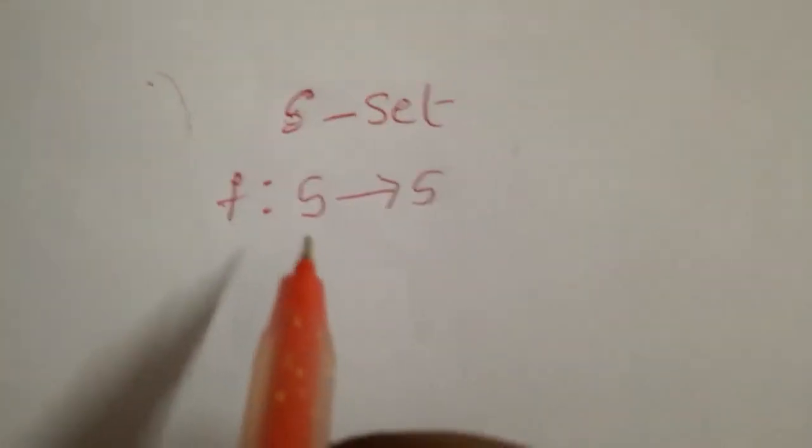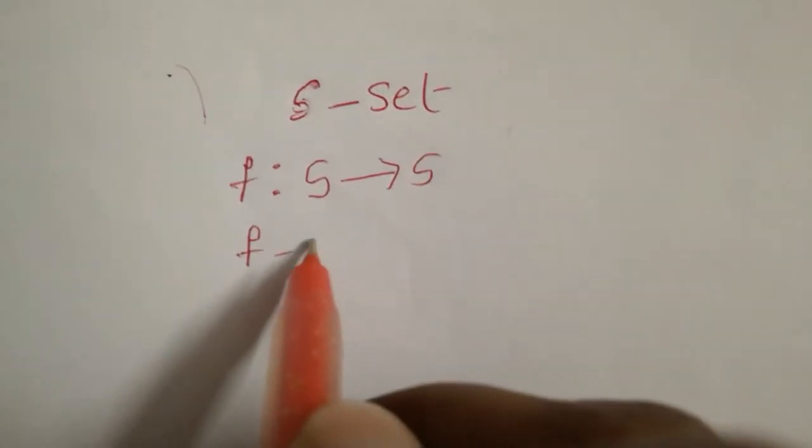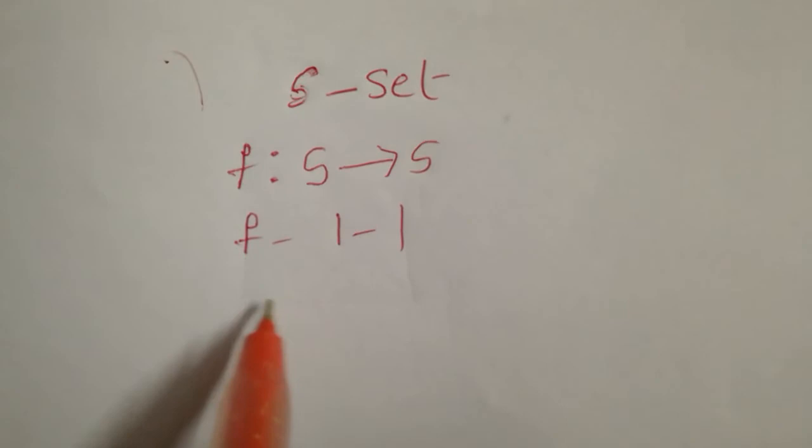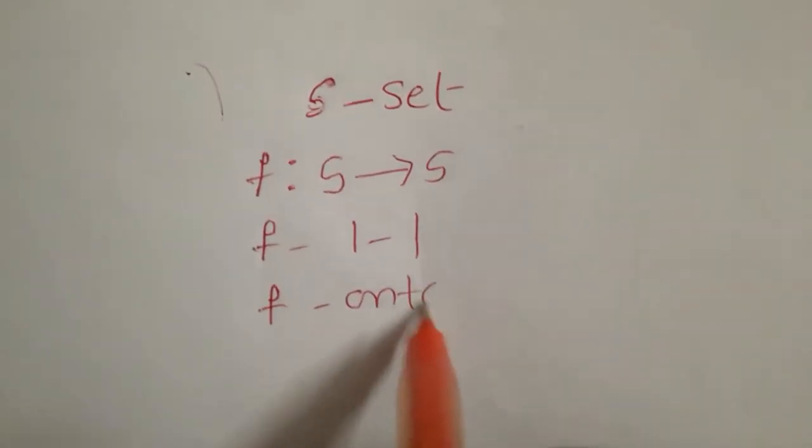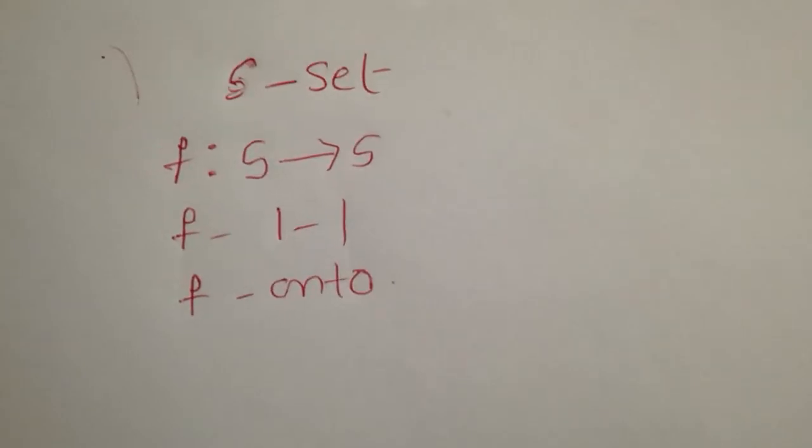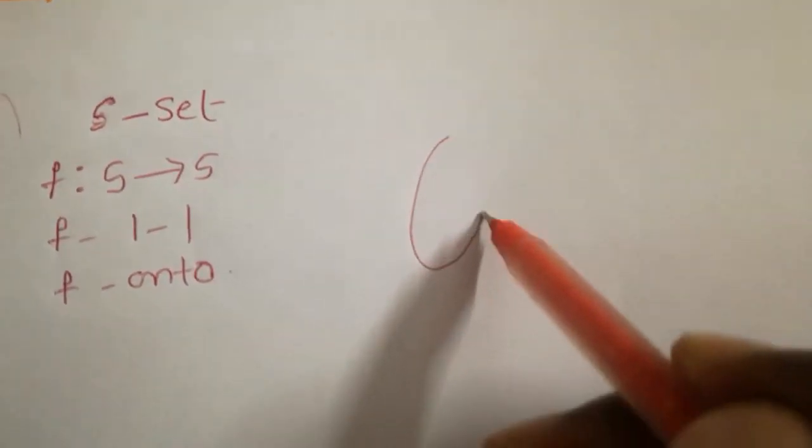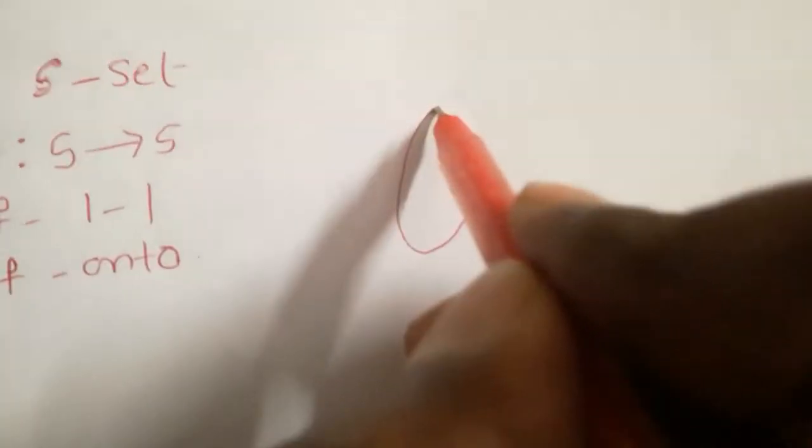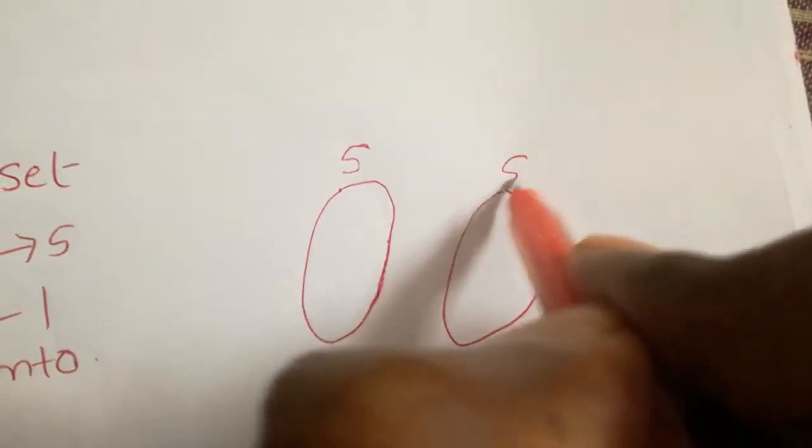When f is 1-1 and f is onto, you can draw like this. So f is mapped from the set S to S.